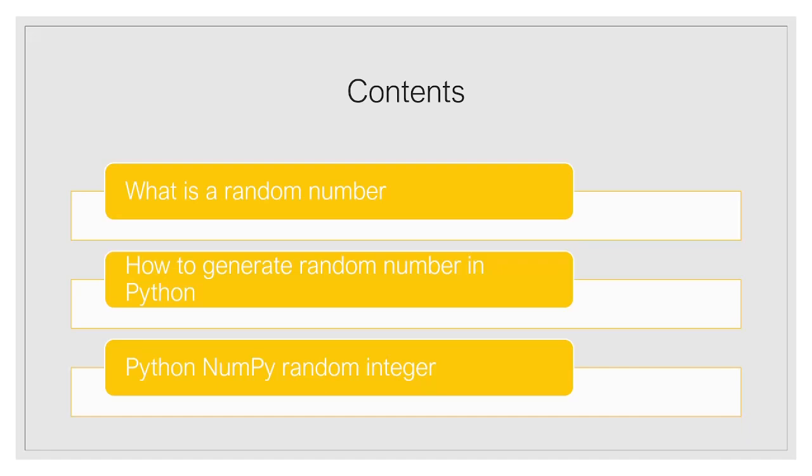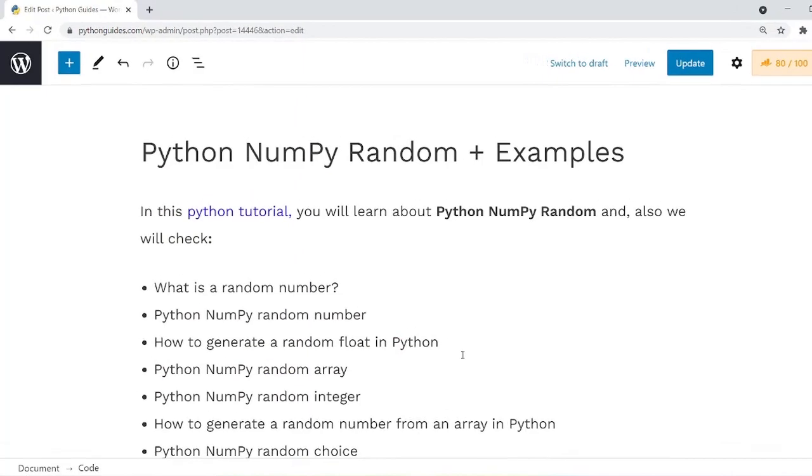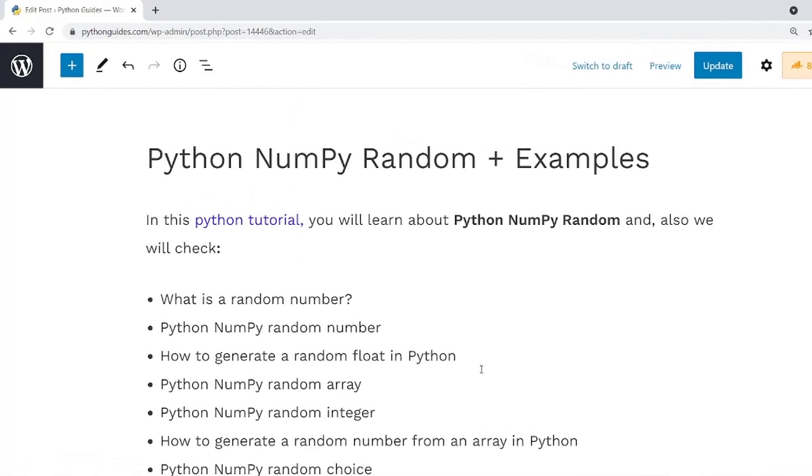We have already created a detailed article on this topic and the link will be available in the description. You can get all the code related to the examples from that article. Now let me show you the article and we will discuss more about NumPy random.